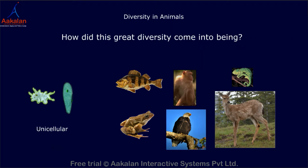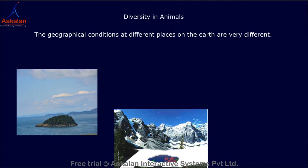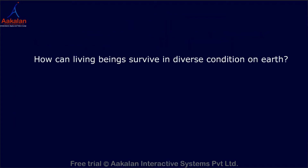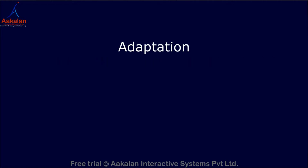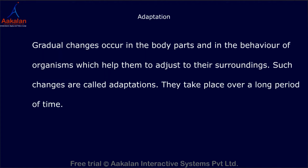But how did this great variety come into being? The geographical conditions at different places on the earth are very different, yet living things exist in all these diverse conditions. How can living beings survive in such diverse conditions? The answer is adaptation. Gradual changes occur in the body parts and behaviour of organisms which help them adjust to their surroundings. Such changes are called adaptations, and they take place over a long period of time.